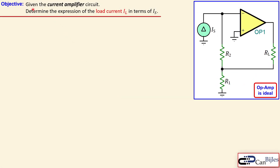We have the following objective: given this current amplifier circuit shown here, we'd like to determine the expression for the load current flowing through RL in terms of the source current IS. We have three resistors — R1 and R2 — that will set the gain of this current amplifier. We also have a load resistor where the current IL flows.